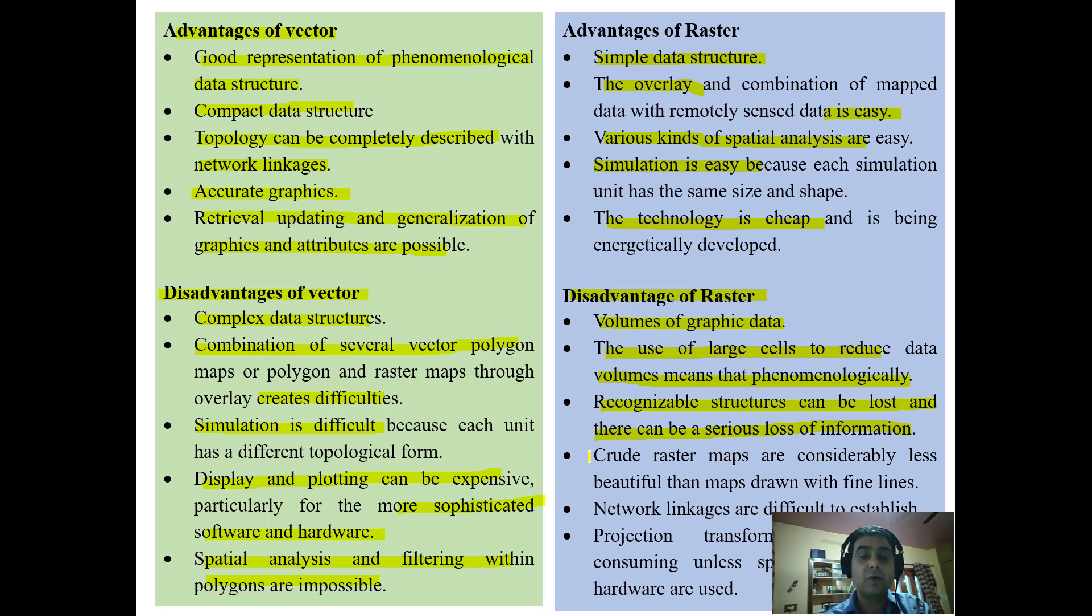Recognizable structures can be lost and there can be a serious loss of information while processing. Crude raster maps are considered less beautiful. Network linkages are difficult to establish which are very easy in vector, and projection transformations are time consuming unless special algorithms or hardware are used.